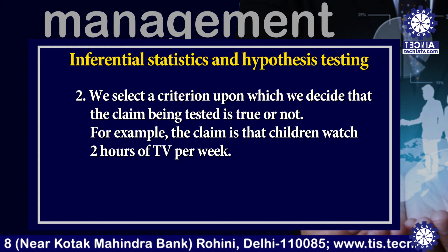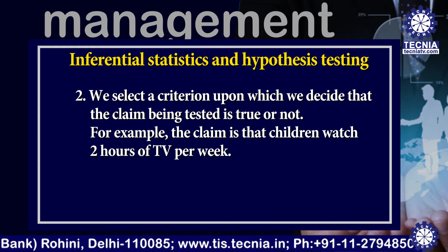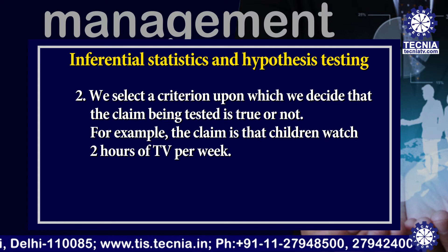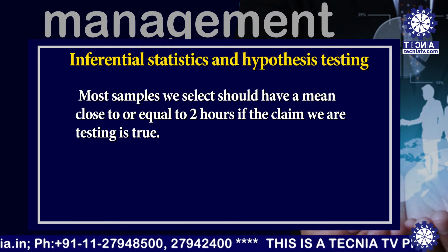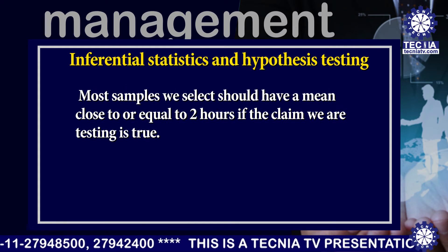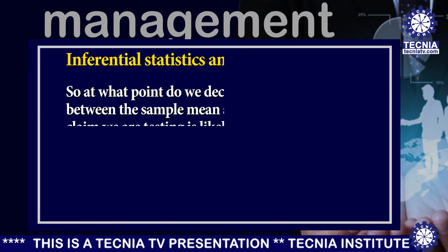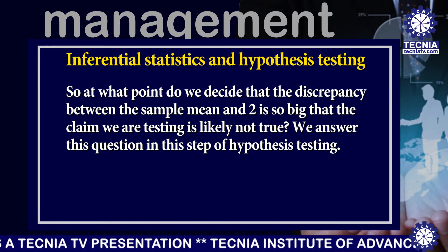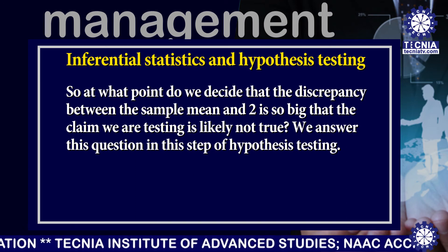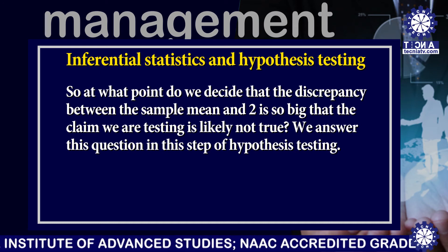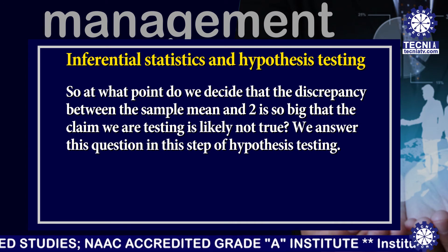Second, we select a criteria upon which we decide that the claim being tested is true or not. For example, the claim is that children watch 2 hours of TV per week. Most samples we select should have a mean close to or equal to 2 hours if the claim we are testing is true. So, at what point do we decide that the discrepancy between the sample mean and 2 is so big that the claim we are testing is likely not true? We answer this question in this step of hypothesis testing.